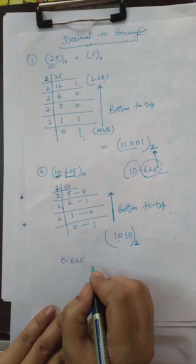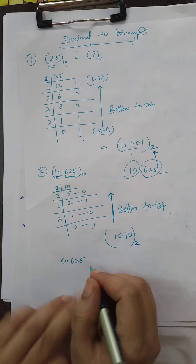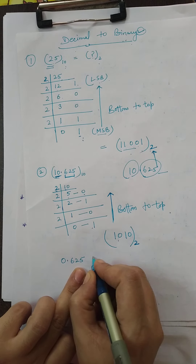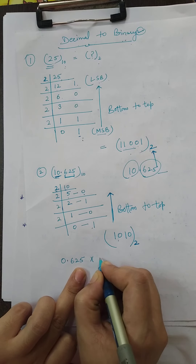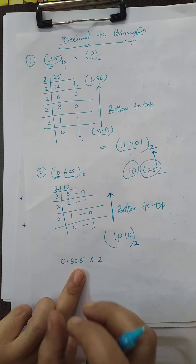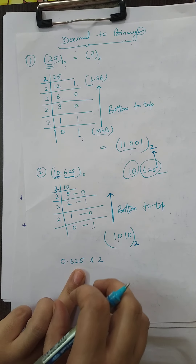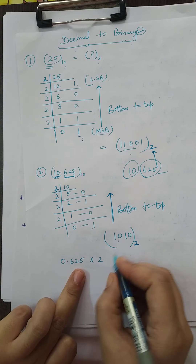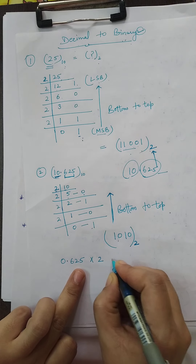Now take the fraction part 0.625. This fraction part is multiplied by 2.